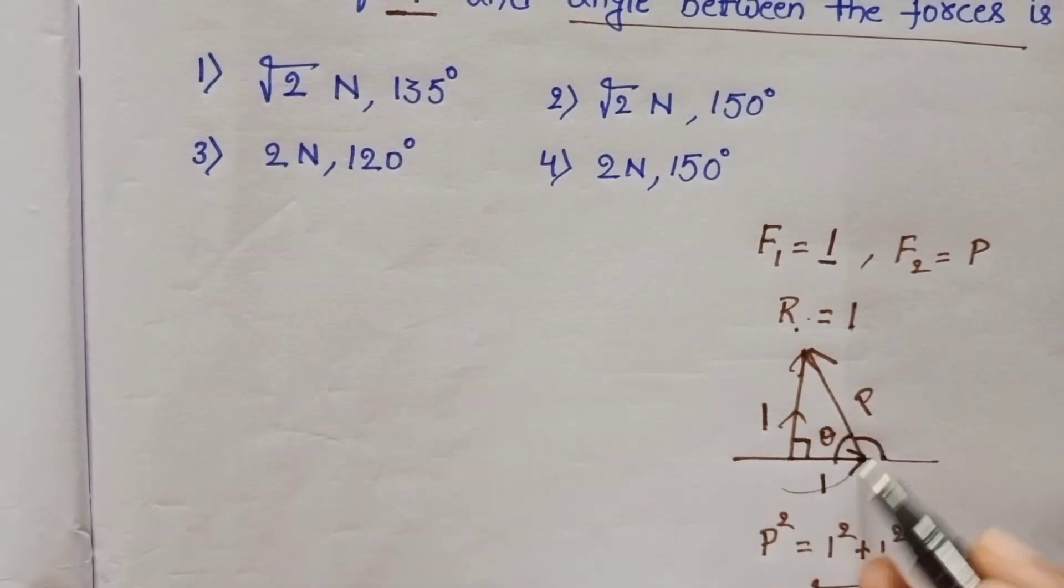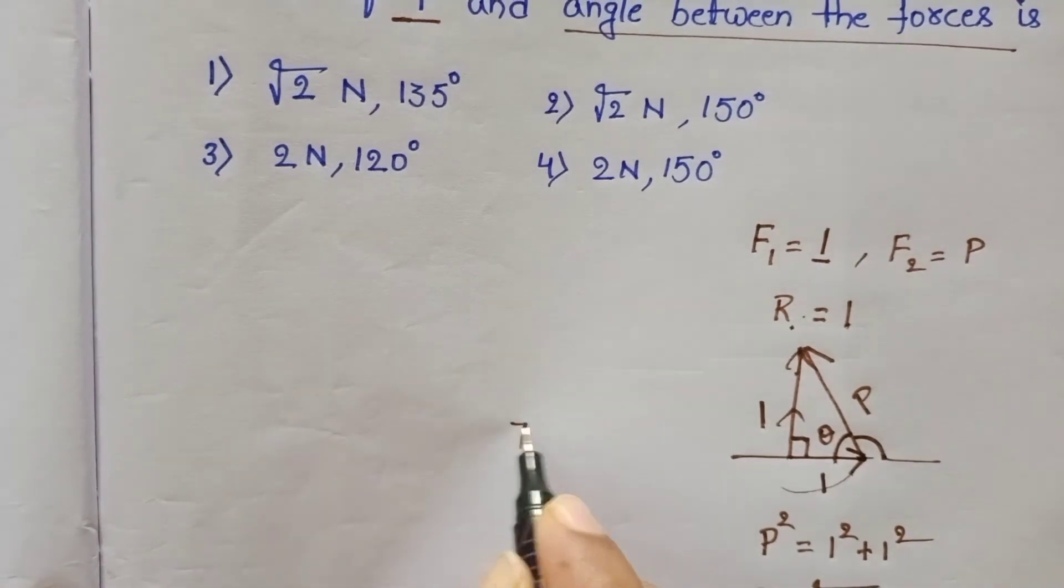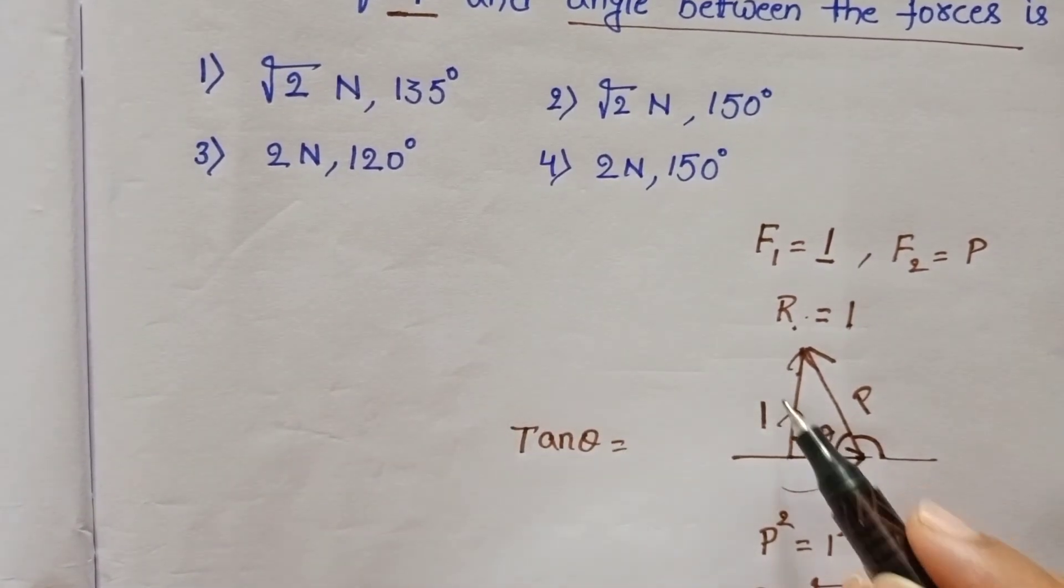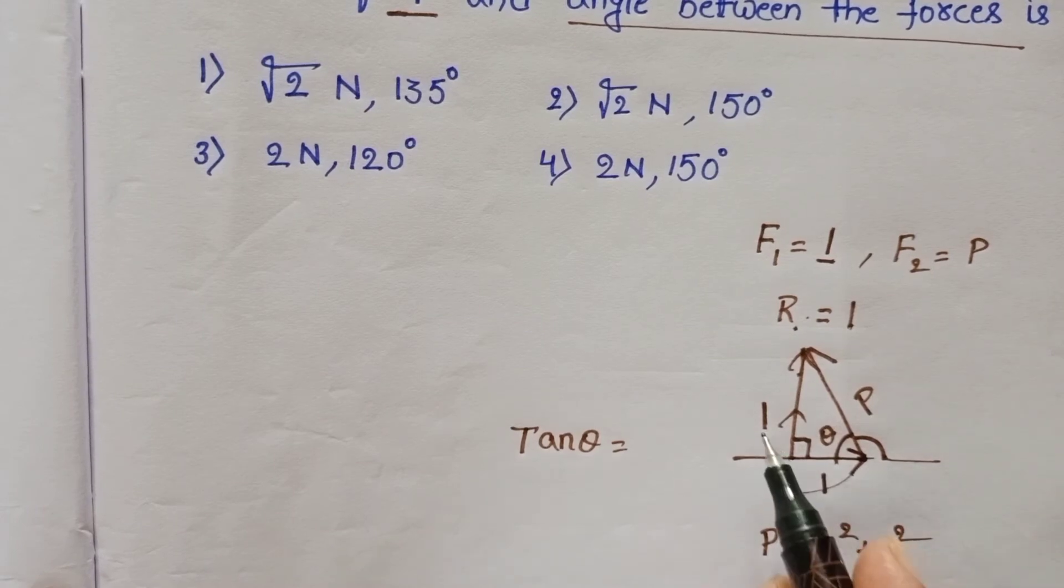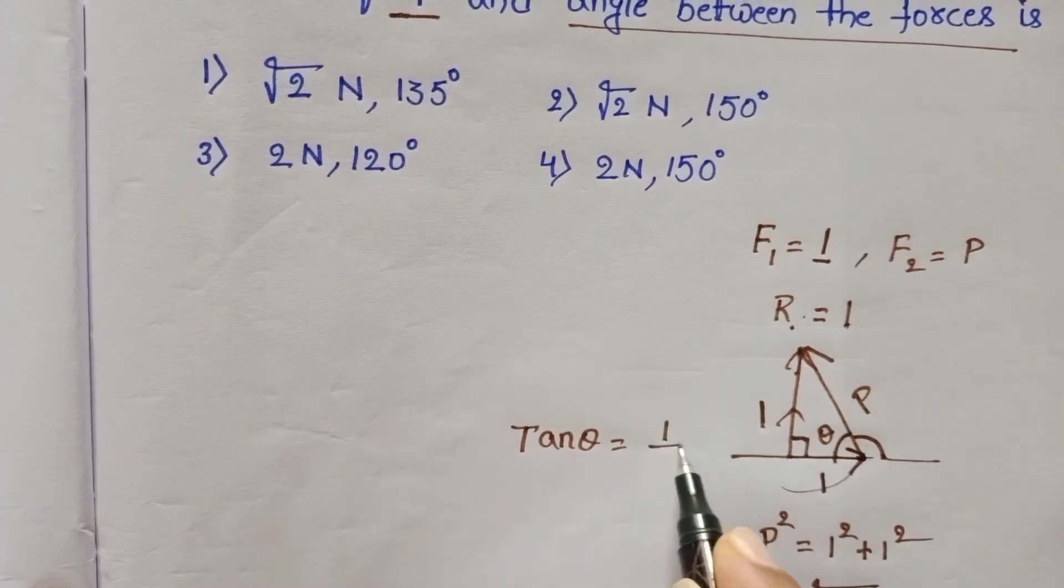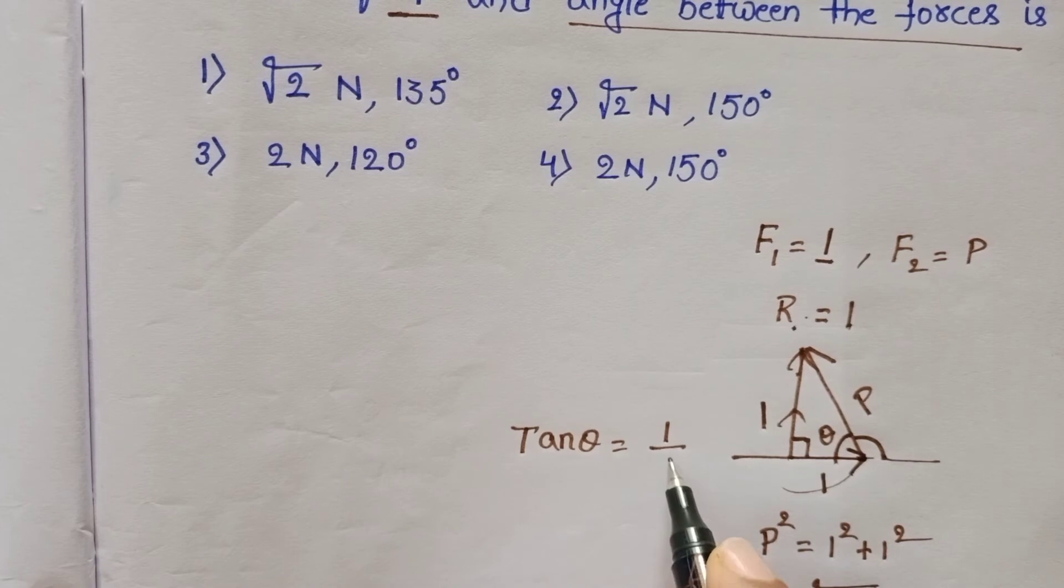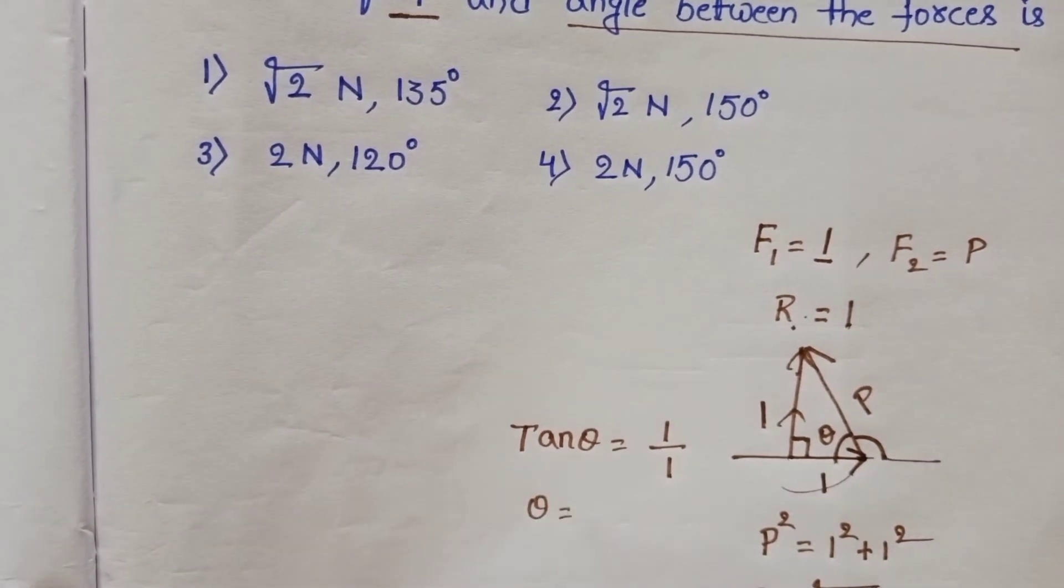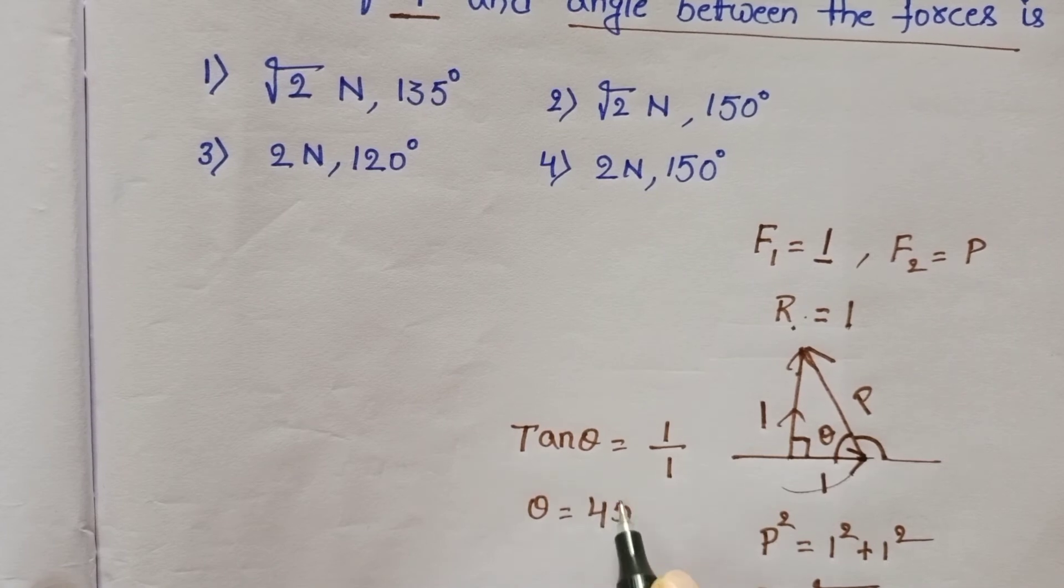Now from this triangle, tan theta is equals to opposite side by adjacent side. Opposite is 1 and adjacent is 1. 1 by 1 is equals to 1. Then theta is equals to 45 degrees.